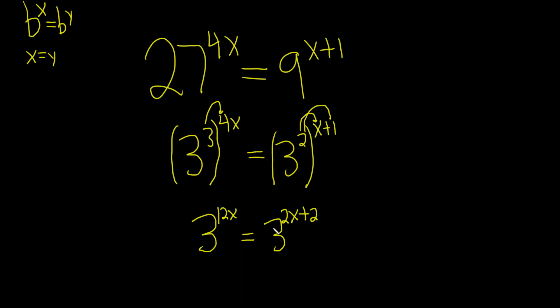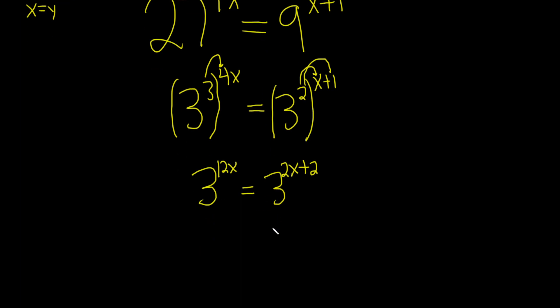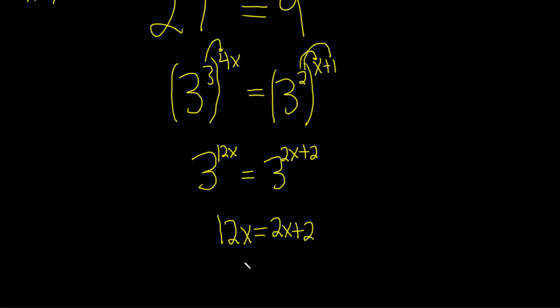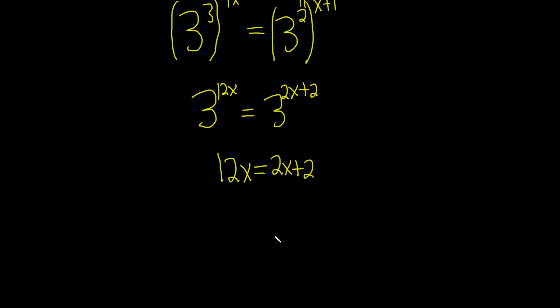Now we're in a situation where we have the same bases on both sides. So now we can drop the 3's, so we have 12x equals 2x plus 2. We're looking for x, so subtract the 2x from both sides. These cancel, so 12x minus 2x is 10x, and here we have our 2.